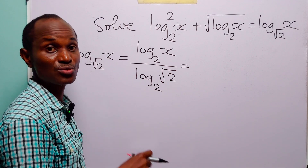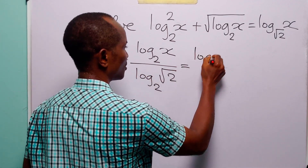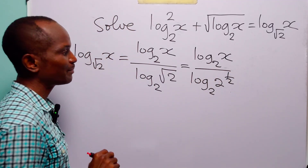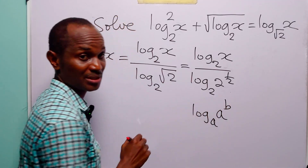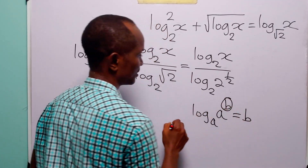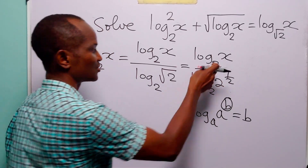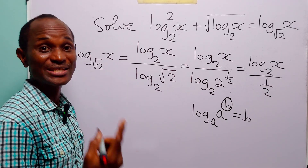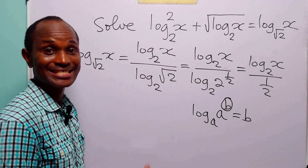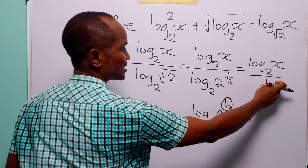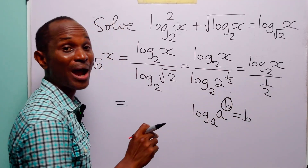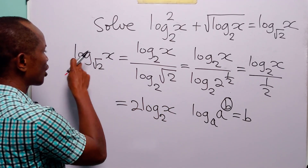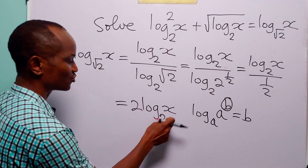We can write root 2 as 2 to the power half. So this is equal to log to base 2 of x divided by log to base 2 of 2 to the power half. Now, log to base 2 of 2 to the power half is equal to half. So this becomes log to base 2 of x divided by half. Dividing by a fraction is the same as multiplying by its reciprocal, so this is 2 times log to base 2 of x. Therefore, log to base root 2 of x equals 2 times log to base 2 of x.